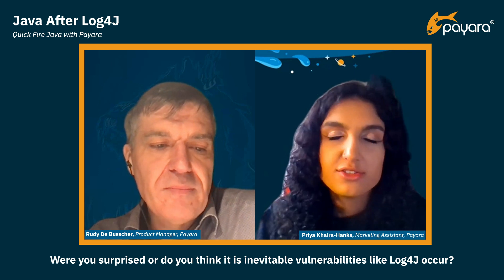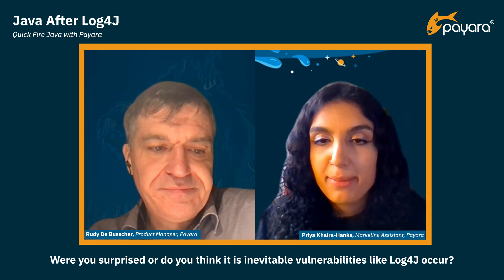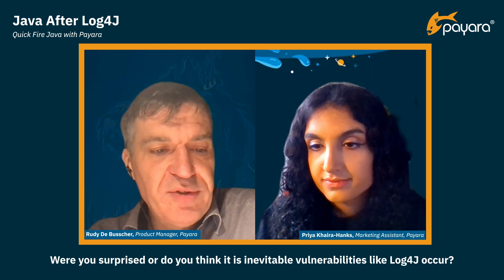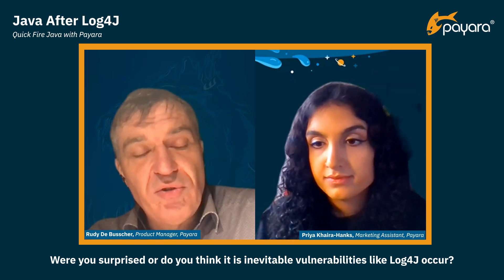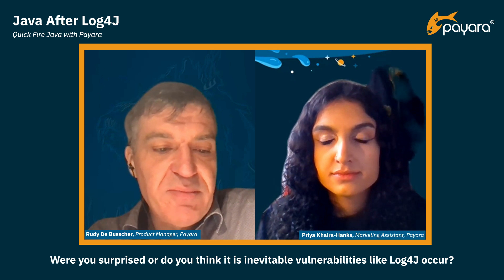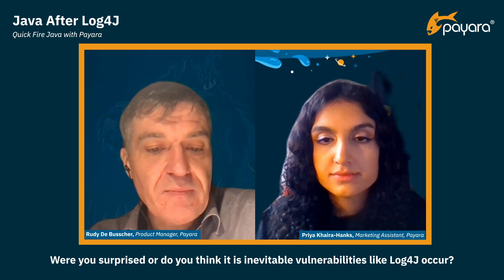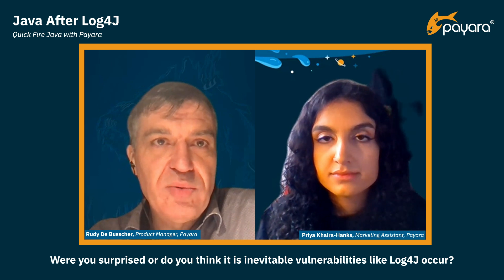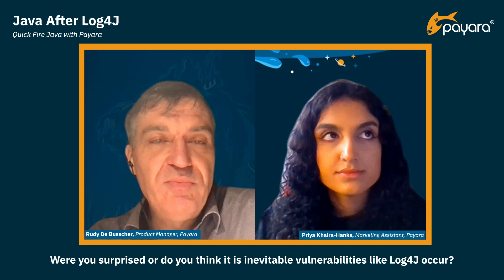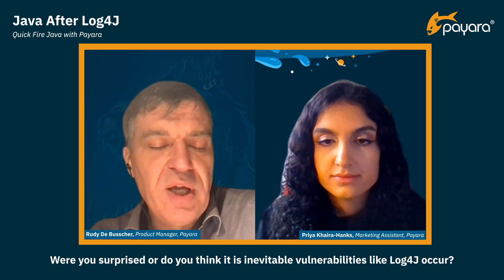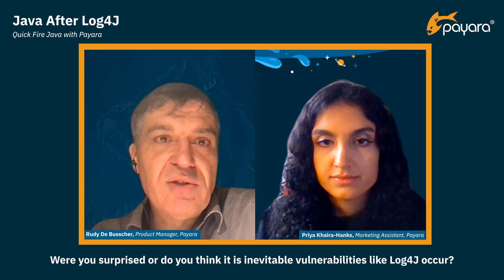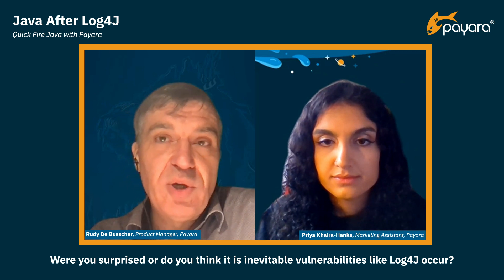Were you surprised, or do you think it's inevitable that vulnerabilities like Log4j happen? Not really surprised, because vulnerabilities are discovered each week, each month - that happens regularly. Of course, it does not always have the same large impact as the Log4j incident. It happens all the time and we need to be aware that it can happen. We always need to think about how certain people can use the combination of features available in our system to their own benefit in unwanted ways, like remote code execution or retrieval of personal data. But most of the time it is a rather complex situation, so it is very difficult to determine upfront if it's possible or not.